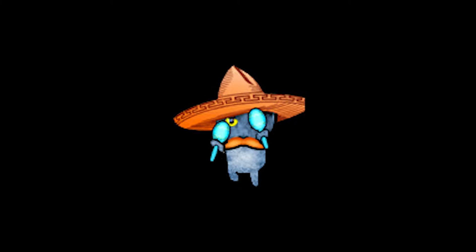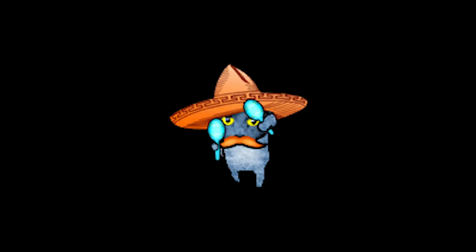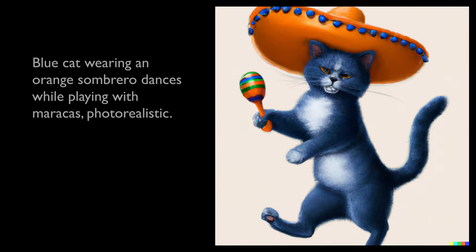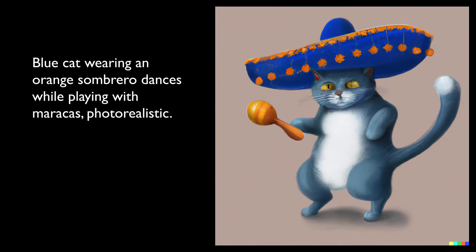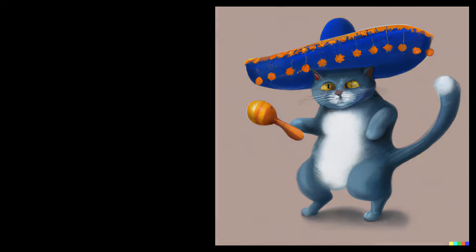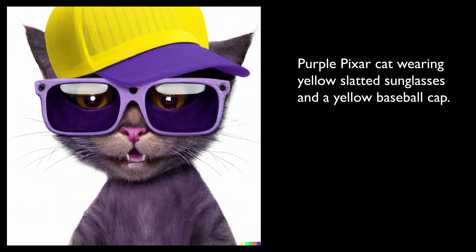Next I wanted to see how DALL-E 2 would render one of the emotes from my Twitch channel. So here we have a blue cat wearing an orange sombrero while dancing and playing maracas. And here's an illustration of a purple cat wearing sunglasses and a yellow baseball cap.